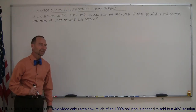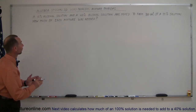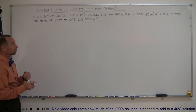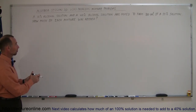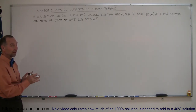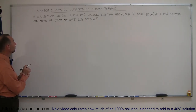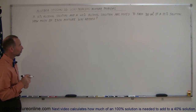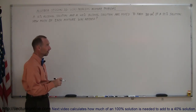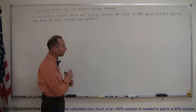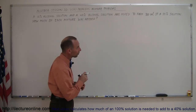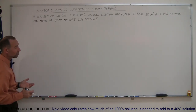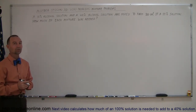Welcome to iLecture Online, here is lesson 3D of word problems. We're going to be dealing with mixture problems. A 10% alcohol solution and a 40% alcohol solution are mixed to form 800 milliliters of a 35% solution. How much of each mixture was needed?